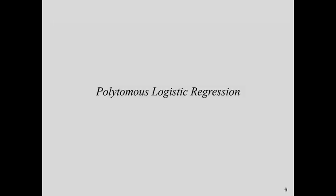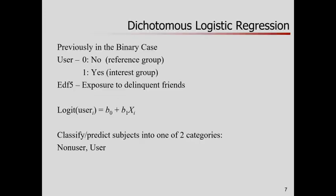Let's develop polytomous logistic regression. In dichotomous logistic regression, we have an outcome variable, but we don't actually use that directly — we have the logit transformation, odds and probabilities and all that. On the right-hand side, a regular linear function: intercept plus slope times predictor. This helps us make predictions or classifications into one of our two categories.